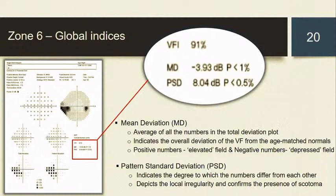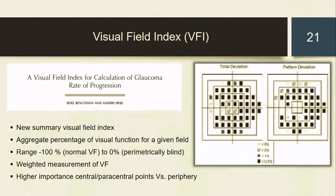PSD is an index with a positive sign that gives an idea about the similarity of the patient's field to the shape of the hill of vision. A low PSD indicates a normal hill shape; a high value indicates a disturbed shape. A localised defect, as typically seen in glaucoma, gives a high PSD, whereas a generalised defect gives a low PSD. For example, if the patient has cataract but no glaucoma, the report shows a high MD but probably a normal PSD. The third global index is VFI, ranging from 0 to 100%, with 100% being normal and 0% indicating a perimetrically blind person. All global indices are interrelated and should be considered together.